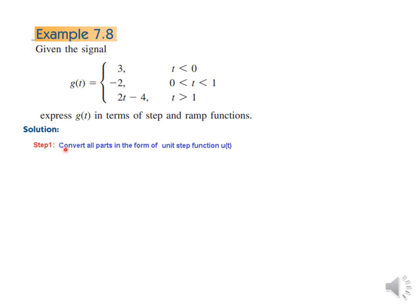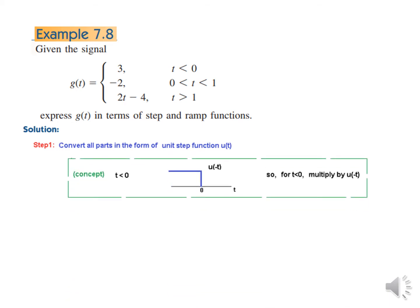The first step is to convert all parts in the form of a unit step function. When t is less than 0, we multiply the signal by u(-t), which is 1 before 0 and 0 after. In our case, g(t) is 3 for t less than 0, so we multiply 3 by u(-t).